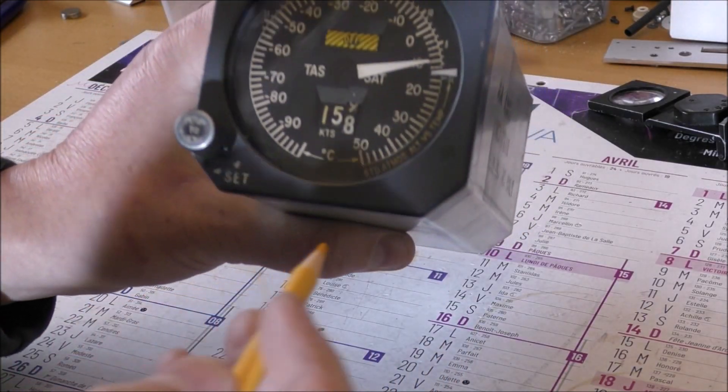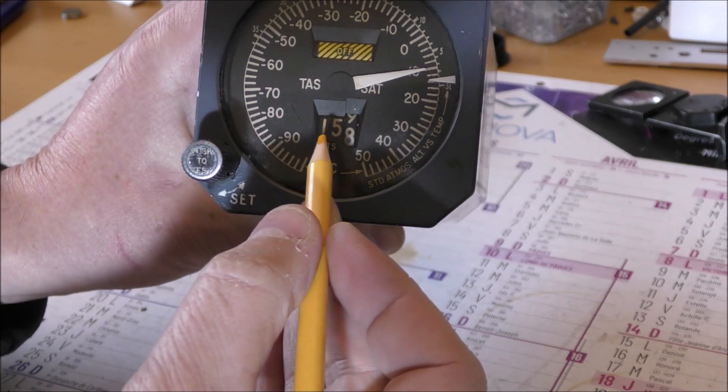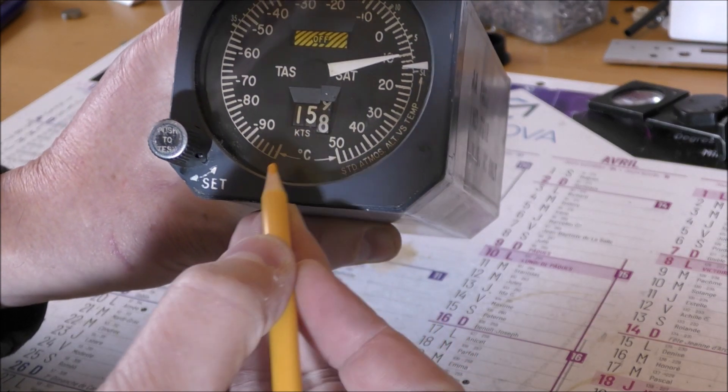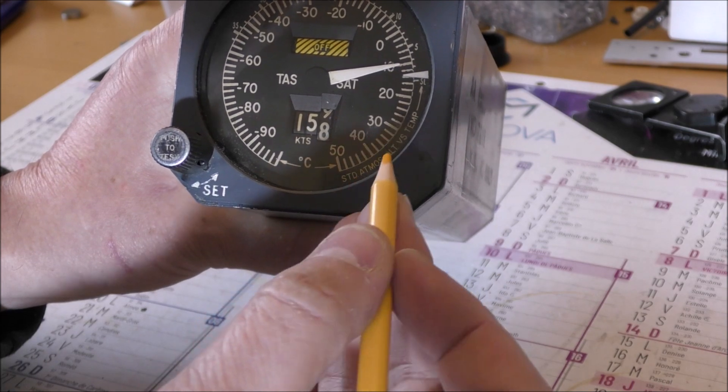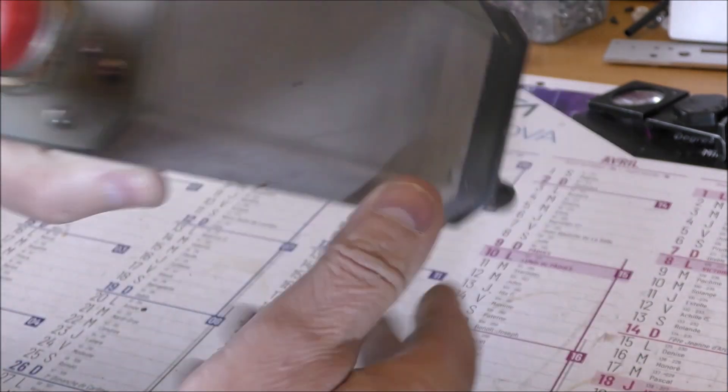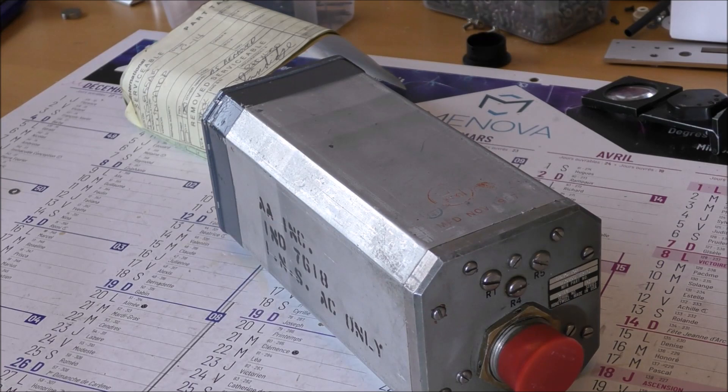The true airspeed is indicated by this digital mechanical display. The temperature is indicated by this pointer here. First, as usual, let's open that thing to see what is inside.